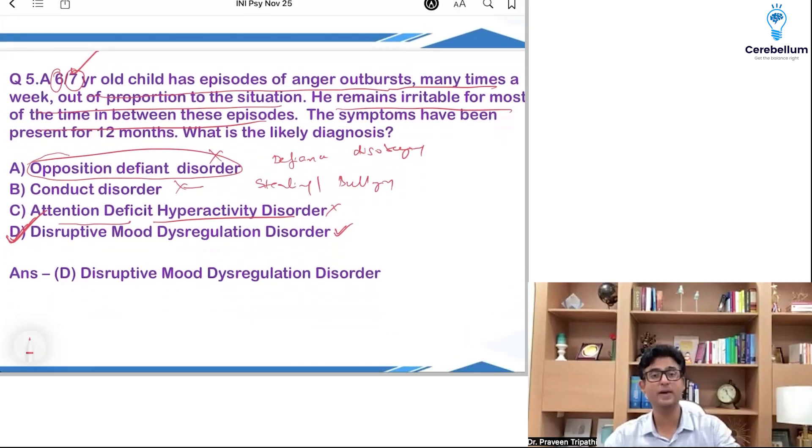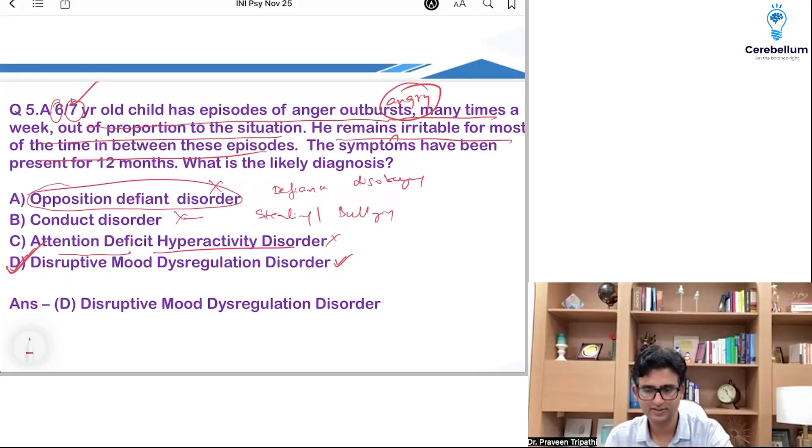There was another question on McNaughton's rule, which would be covered by Dr. Atul sir in Forensic Medicine. Zoeya saying angry was also mentioned. So add angry. Otherwise, my record, the questions that I have framed, are they okay? Anything I'm missing? Take care.